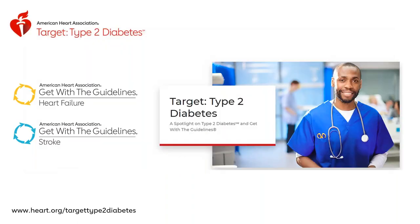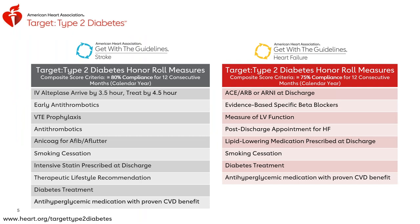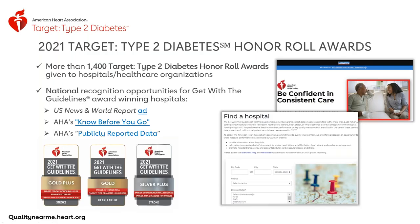AHA's Target Type 2 Diabetes is a component of this broader initiative that aims to ensure patients with type 2 diabetes receive the most up-to-date evidence-based care. American Heart Association has established the Target Type 2 Diabetes honor roll recognition opportunity for hospital participants of Get With the Guidelines Heart Failure and Get With the Guidelines Stroke. Hospitals that meet specific measure thresholds may be eligible for recognition alongside their existing Get With the Guidelines awards. This past year, we gave out more than 1,400 Target Type 2 Diabetes honor roll awards. Congratulations to all.